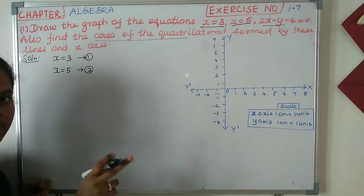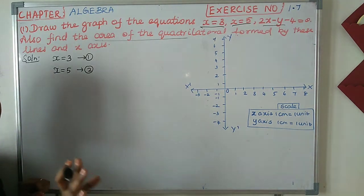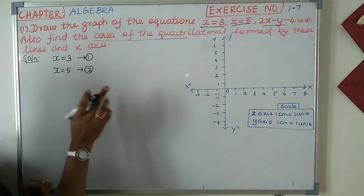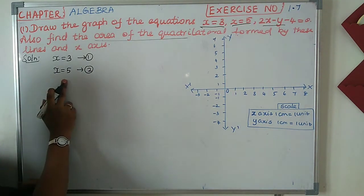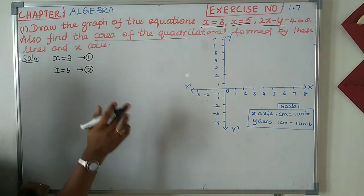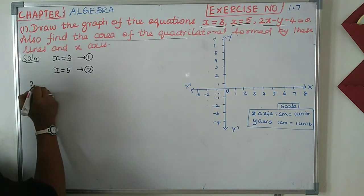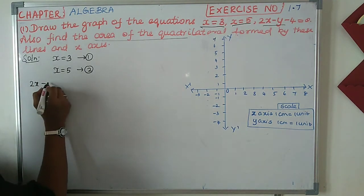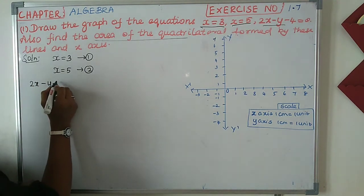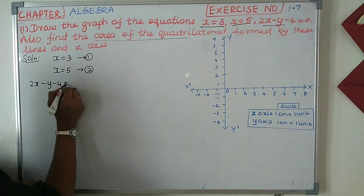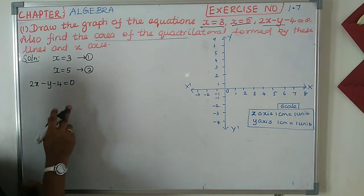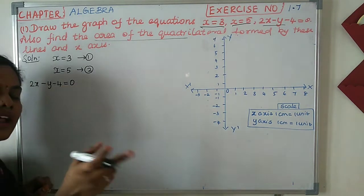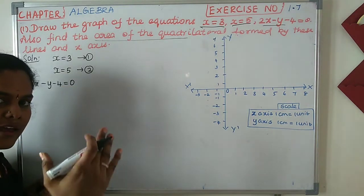This is a straight line, right? Because this is a straight line, you can just plot a straight line. Next: 2x minus y minus 4 equal to 0. Now, this is a graphical method.